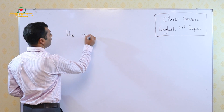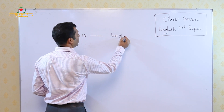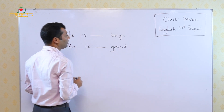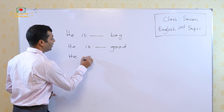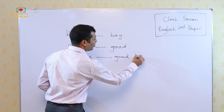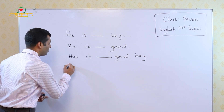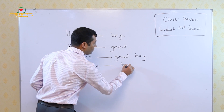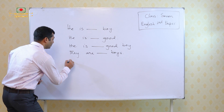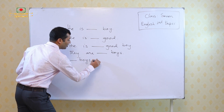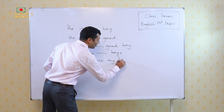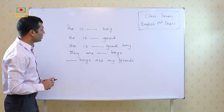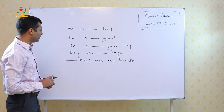He is ___ boy. Next sentence: he is good. The next sentence: he is ___ good boy. Now come to the next sentence: they are boys. Then the next sentence: ___ boys are my friends. Look at these five sentences: He is ___ boy. He is ___ good. He is ___ good boy. They are ___ boys and ___ boys are my friends.